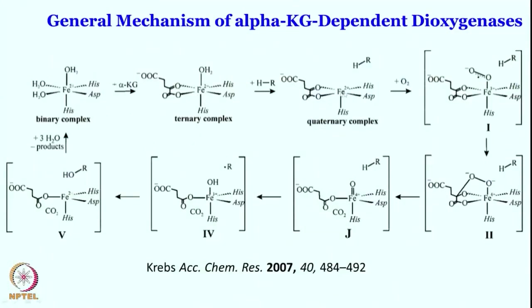In the last class we have seen the reaction mechanism for these dioxygenases, where we saw how the enzyme is dependent on alpha-ketoglutarate and how the high-valent iron-oxo species is generated. Alpha-ketoglutarate is bound with the iron center, then oxygen activation takes place and it attacks on the keto center, giving an alkyl peroxo-type intermediate, and subsequently oxygen-oxygen bond cleavage gives rise to the iron(IV)-oxo intermediate, which can then react with the organic substrate.